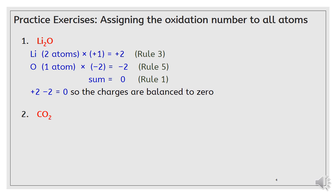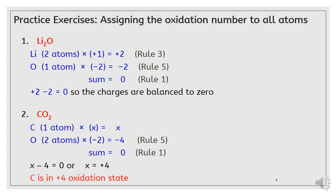Example number two, carbon dioxide, CO2. We have two atoms of oxygen with oxidation state -2. Two multiplied by -2 equals -4. This is rule five. Summation must be zero. This is rule one. So, x minus 4 equals zero. That means x equals +4. So, carbon is in +4 oxidation state.